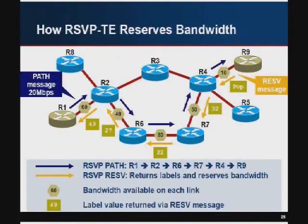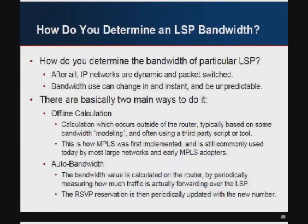Here's a diagram showing how RSVP-TE reserves bandwidth. You start by sending out a path message — it goes from router 1 to 2 to 6 to 7 to 4 to 9. Each step along the way it's checked to see if it can fit. If it can, you get a return label back from the previous router. It goes out as an RSVP path message and comes back as an RSVP reservation message. The most fundamental question of MPLS implementation is how do you determine how much bandwidth an LSP needs, since an IP network is entirely dynamic.